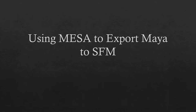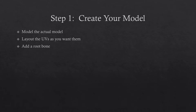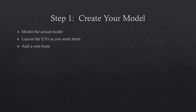Let's go over a summary of what we're going to do. Step one, we're going to create your model — this is something you'll do on your own. You're going to model your actual model, work with UVs, and then add a root bone. The root bone is important for SFM because otherwise it gets created randomly when you compile your model for Source. So it's good to lay down a single bone attached to your model.